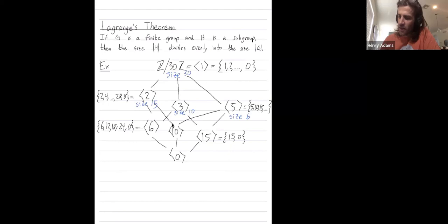Subgroup generated by the element 6 has size 5: 6, 12, 18, 24, and 0. Subgroup generated by 10 has size 3: 10, 20, and 0. And as we see, the subgroup generated by 15 has size 2.